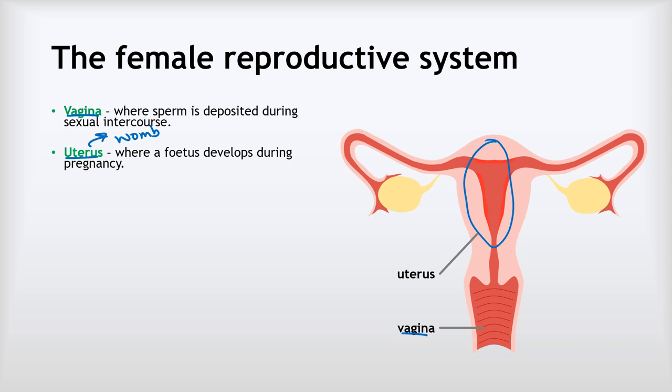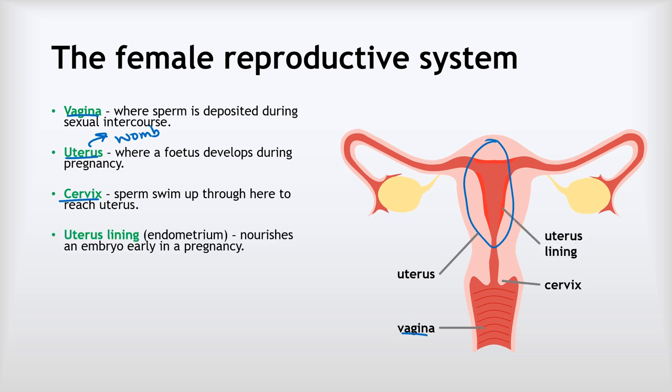The uterus is also sometimes known as the womb and it is where a fetus develops during pregnancy. In order to swim from the vagina to the uterus, the sperm must pass through a narrow channel called the cervix. The cervix is very narrow — only about two and a half centimetres wide — and during childbirth, a baby's head has to pass through it, which is one of the reasons why childbirth is so painful. Next, we have the uterus lining, sometimes known as the endometrium.